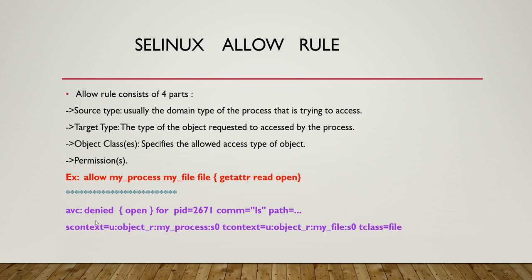If my_process does not have permission to access my_file, that's when AVC denial error occurs. The denial log will show source context as my_process, target context (tcontext) as my_file, and the object class as file. So the allow rule looks like: allow source_context target_context, with the permissions within curly braces specifying what it can access.